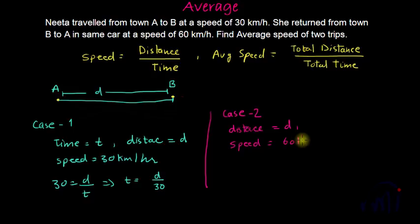And let's assume that time taken this time is T1. So from here 60 is equal to D by T1 or we can say T1 is equal to D by 60.